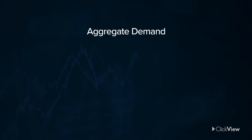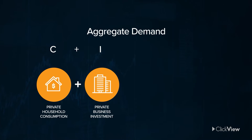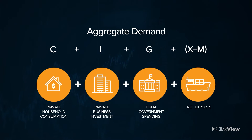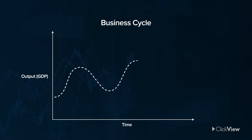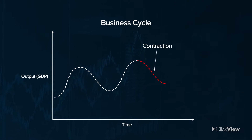As a mathematical equation, aggregate demand equals private household consumption, plus private business investment, plus total government spending, plus net exports. When aggregate demand weakens, it signals a slowdown or contraction in the level of economic activity. As GDP decreases due to lower aggregate demand, the economy contracts.